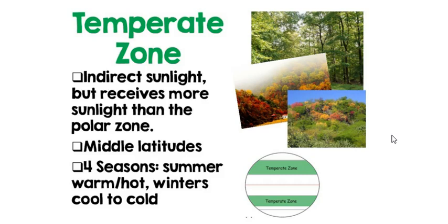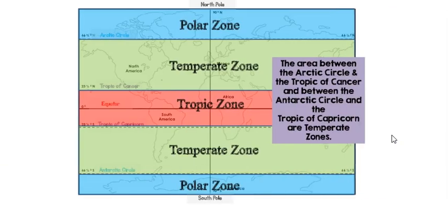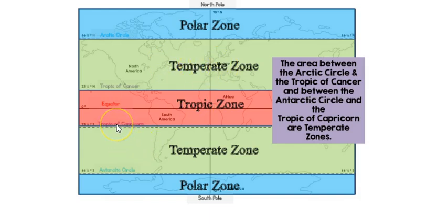The temperate zone receives indirect sunlight but more than the polar zones, so it's not as hot as the tropics but not as cold as the polar zones. There are two temperate zones: one between the Arctic Circle and the Tropic of Cancer, and another between the Tropic of Capricorn and the Antarctic Circle. That's very important to remember.